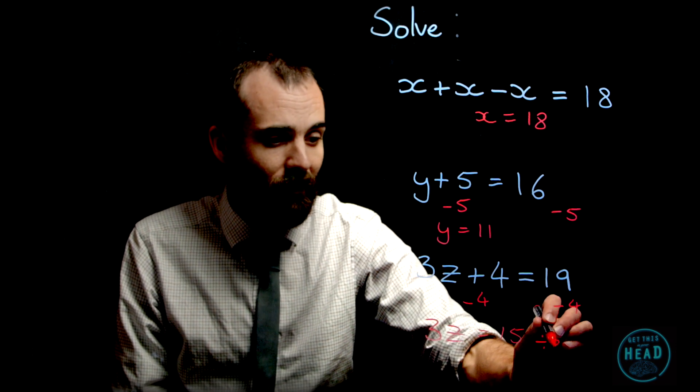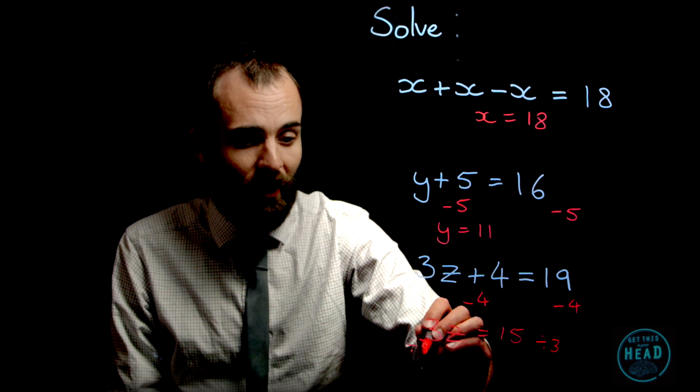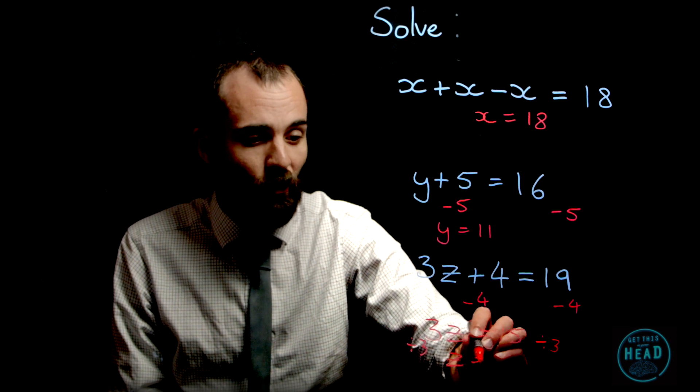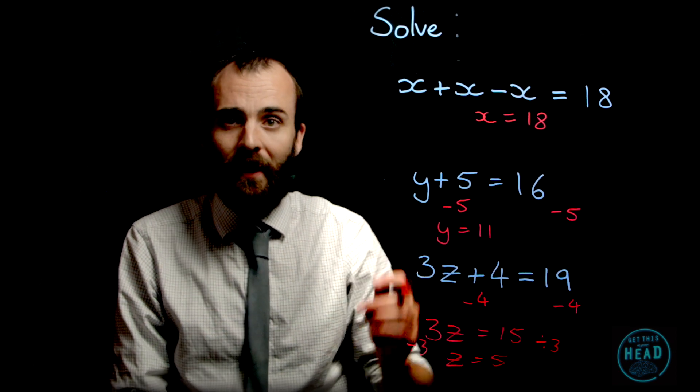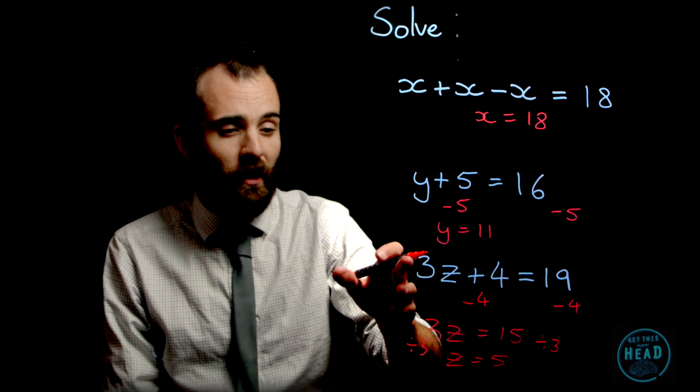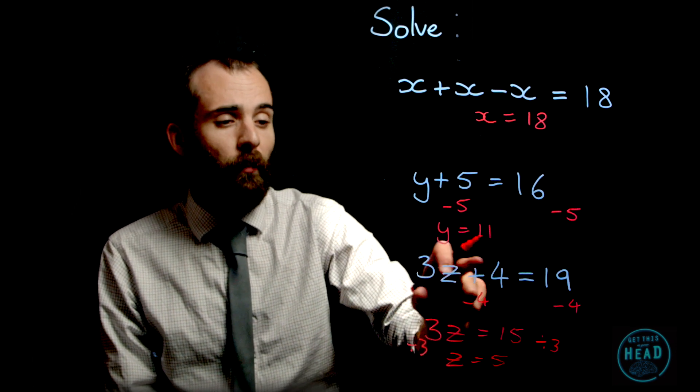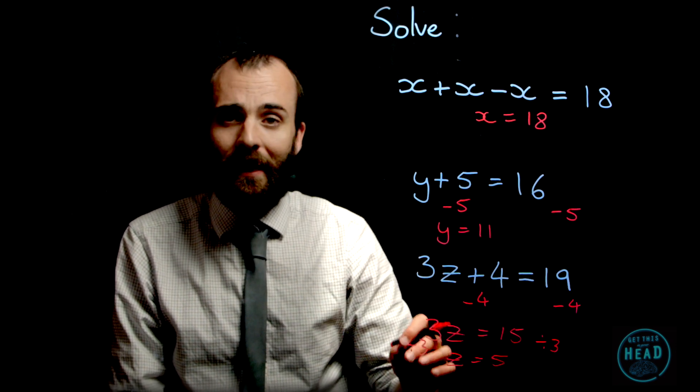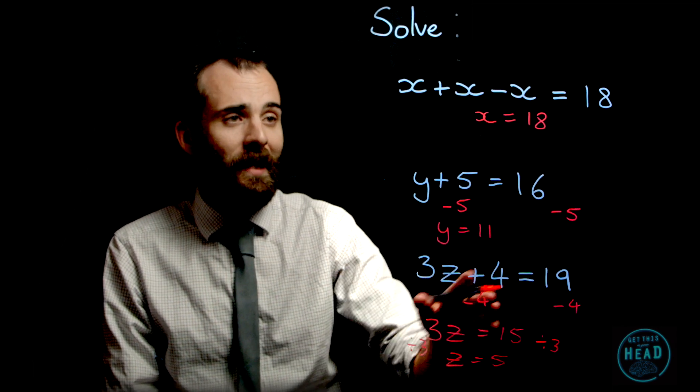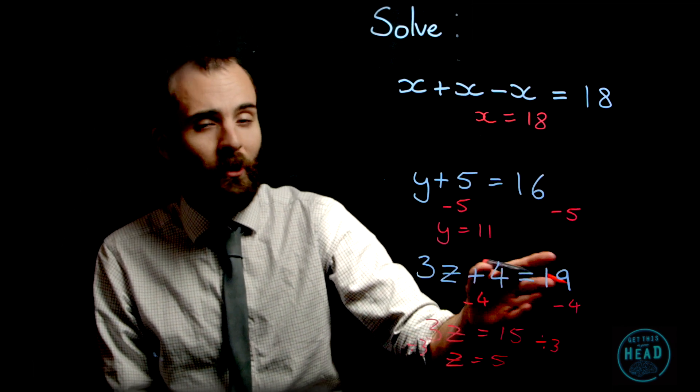3, divide both sides there by 3, gives me z equals 5. Let's check that through: 3 lots of z, z equals 5, that's 15, plus 4 gives me 19. Absolutely spot on. Worked it out: one mark, one mark, two marks.